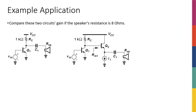At the end of this lecture we'll do a few more examples so it becomes clearer, and then you'll have assignments. We talked about common collectors being buffers. The point of having a buffer is not to have gain — it's actually to have a very low output impedance.